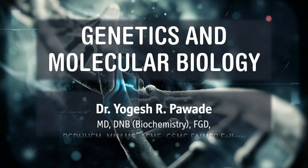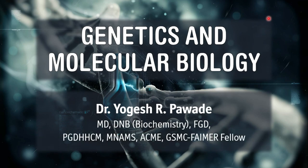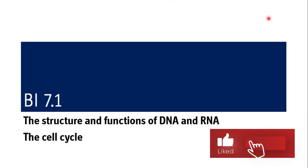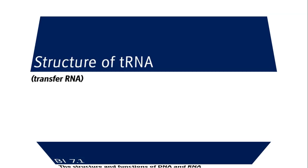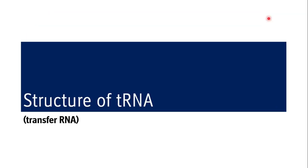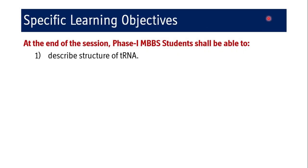Hello everyone, welcome again to the new session in genetics and molecular biology lecture series. I am Dr. Yogesh Paude. Please like and share the video and subscribe to the channel so you do not miss any notifications of upcoming videos. After discussing messenger RNA, ribosomal RNA, and ribosomes under competency BI 7.1 — the structure and functions of DNA and RNA and the cell cycle — we are now moving on to the 8th session on structure of tRNA. The specific learning objective is that at the end of the session a Phase 1 student shall be able to describe the structure of tRNA.